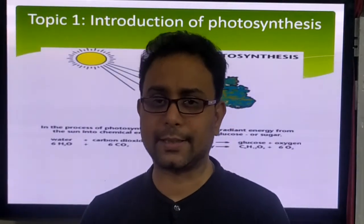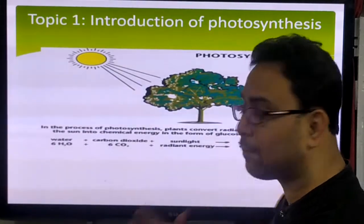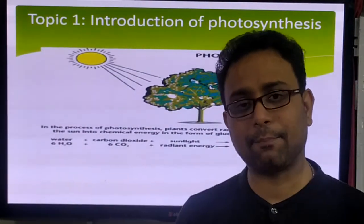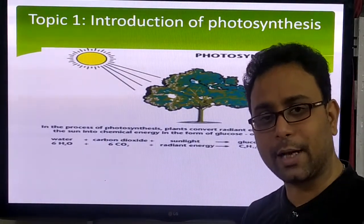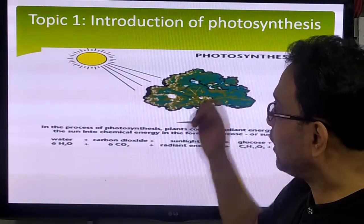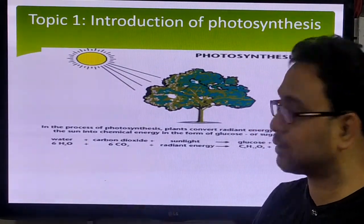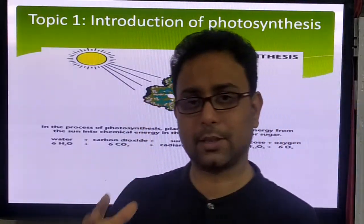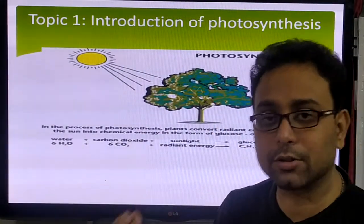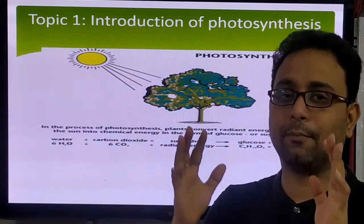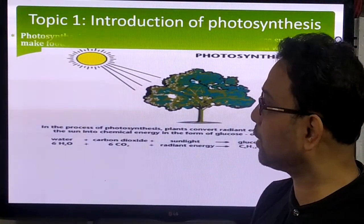Today we discuss what is photosynthesis. Photosynthesis is the process by which green plants can produce their own food. In the photosynthesis process, water and carbon dioxide react together in the presence of sunlight and chlorophyll, and glucose molecules are produced, while oxygen is produced as a by-product. This is the most important definition.